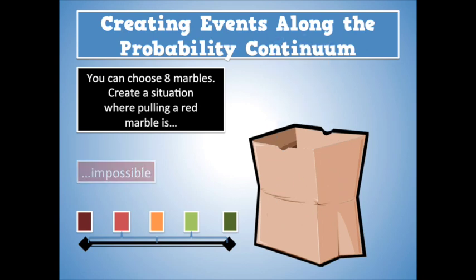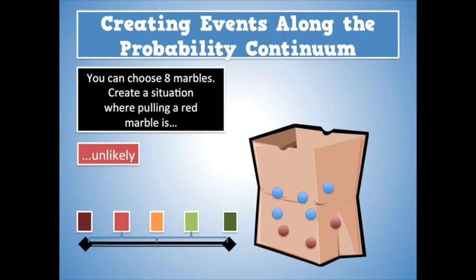Now, what about a situation where pulling a red marble is unlikely? Well, in this case, what you'd have to do is you'd have to put in at least one red marble, but just as long as they are outnumbered by the blue ones. So in this case, we have five blue marbles, three red ones, and so it's more likely that you're going to pull a blue than a red. But it's still possible to pull a red in this case.